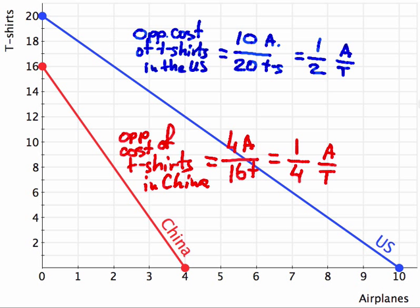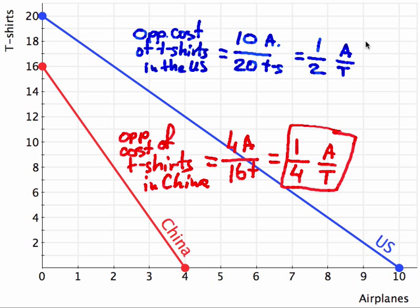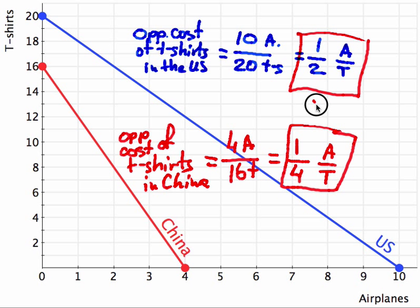Comparing these two numbers reveals that China has a lower opportunity cost of production of t-shirts and therefore has comparative advantage in the production of t-shirts.